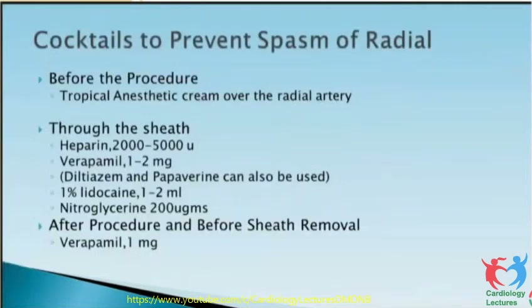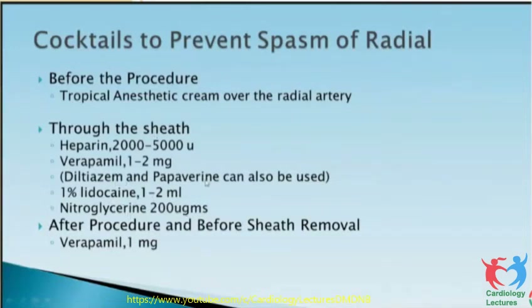Different operators use different cocktails. Before the procedure you can use topical anesthesia cream. The usual cocktail is 2,000 to 5,000 units of heparin, then verapamil or diltiazem, and 1% lidocaine. Everybody is using nitroglycerin; nowadays we use nitroglycerin with heparin if diltiazem is not available. After the procedure and before sheath removal, if there is spasm, you can give verapamil 1 mg intravenously.